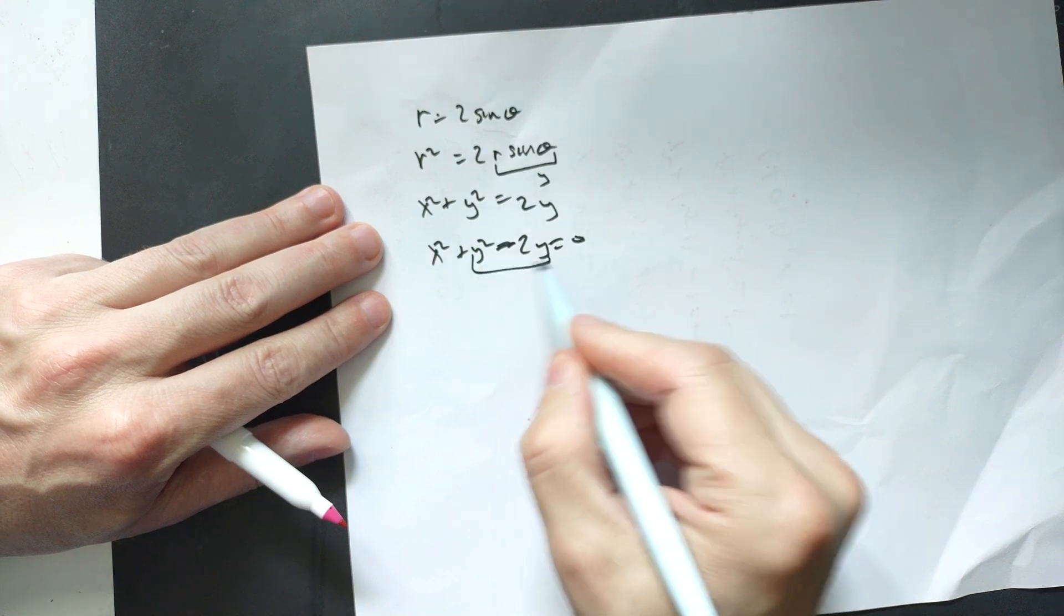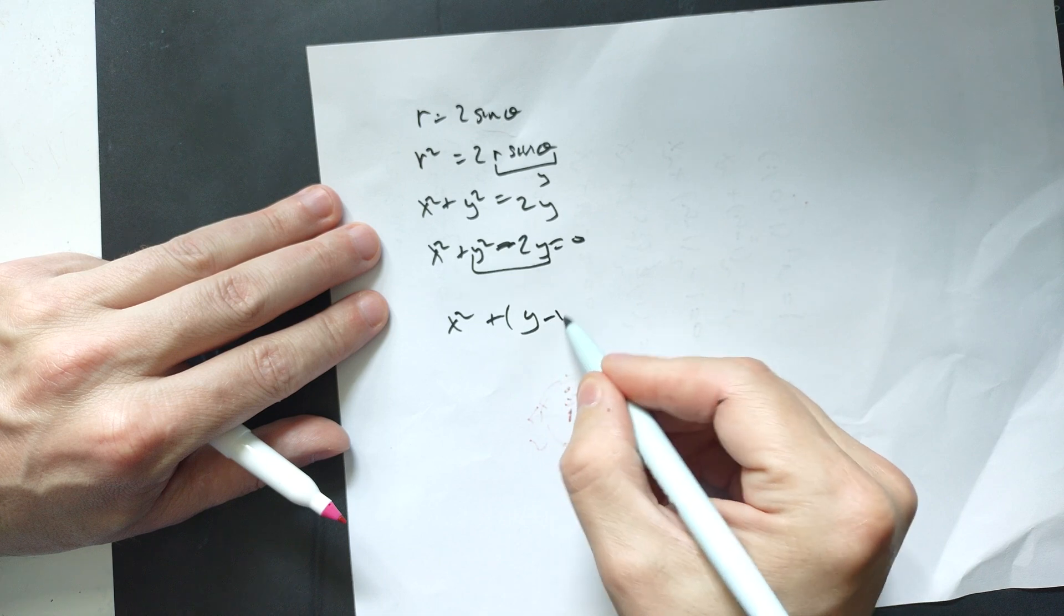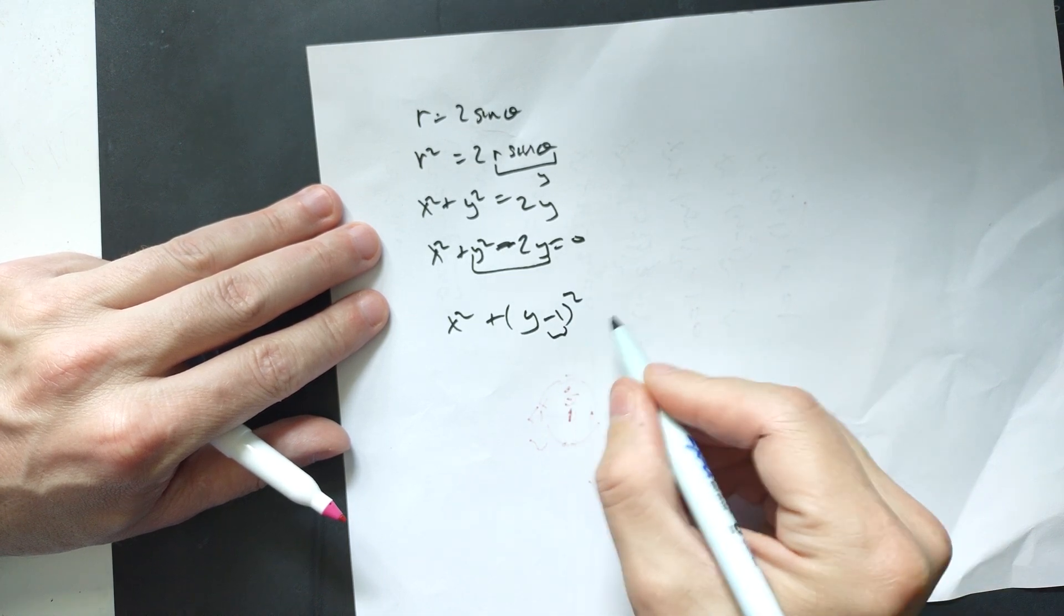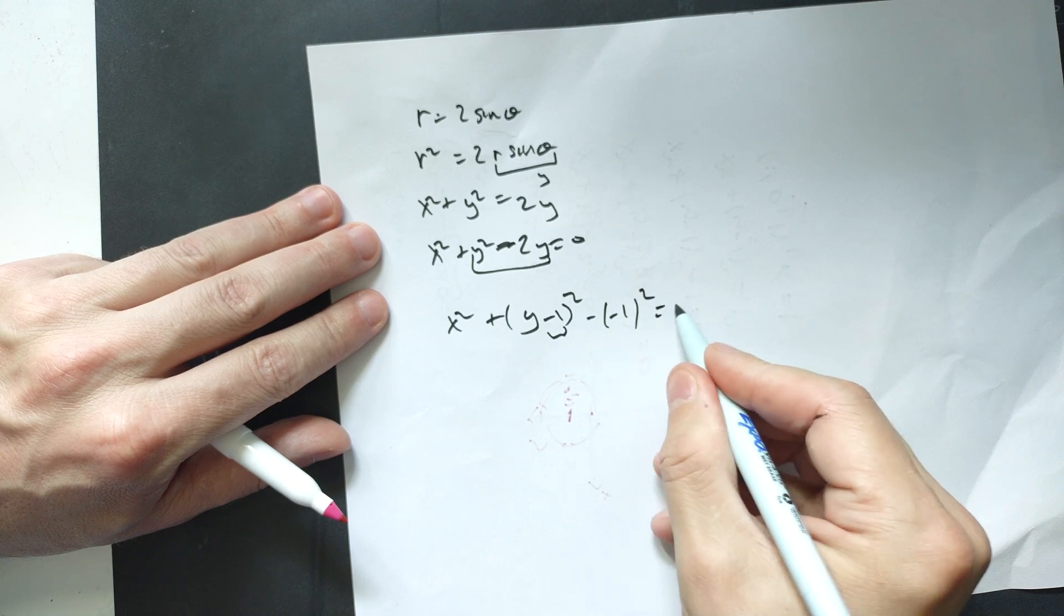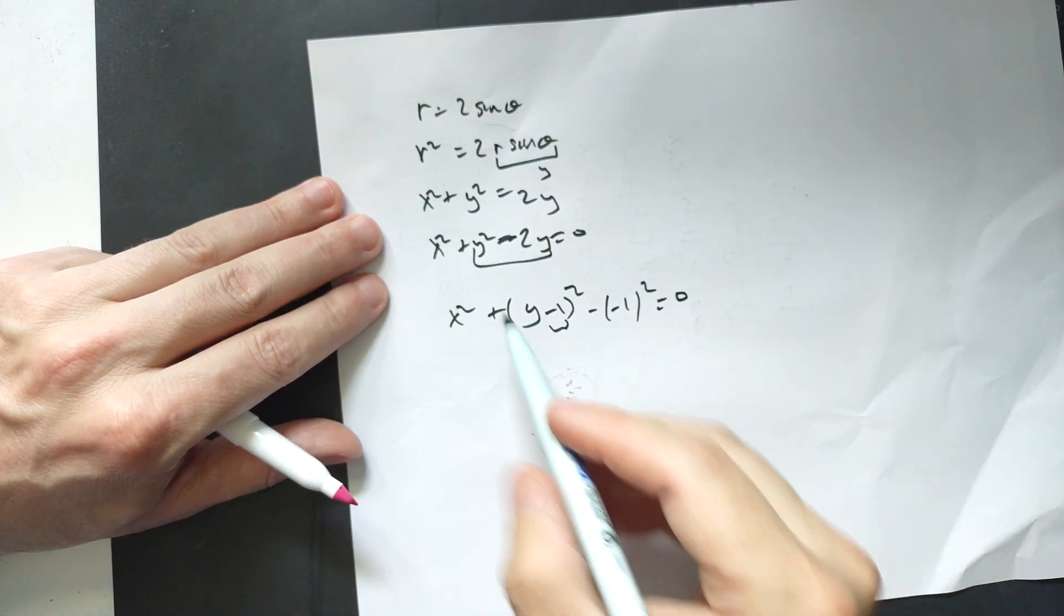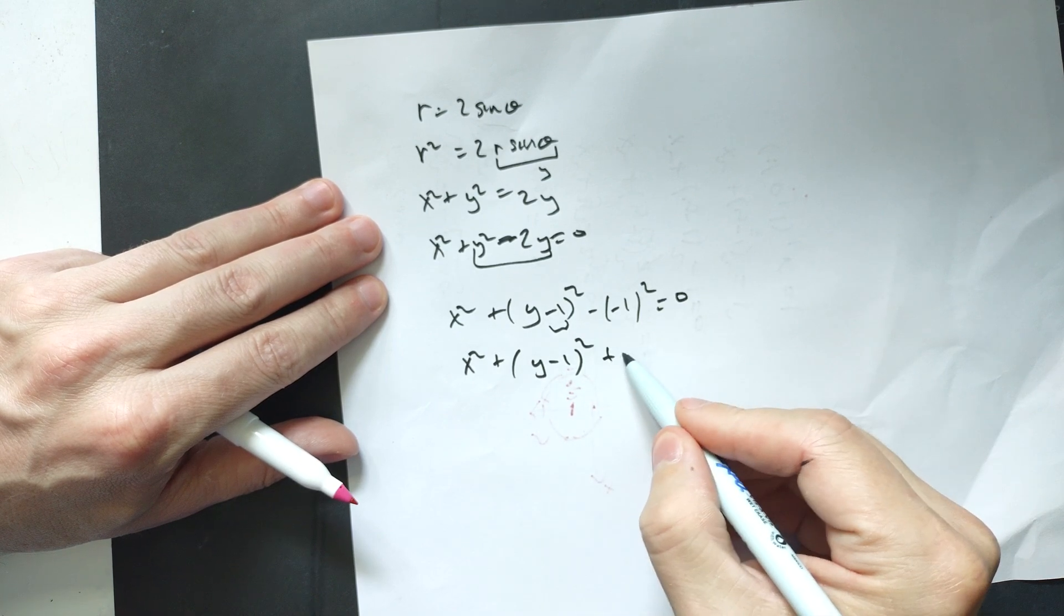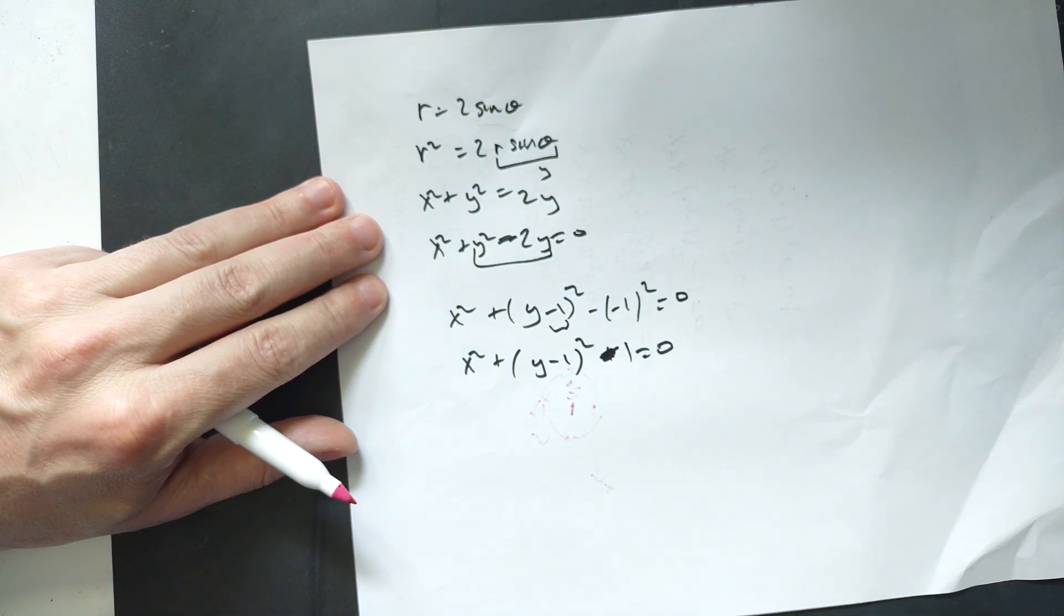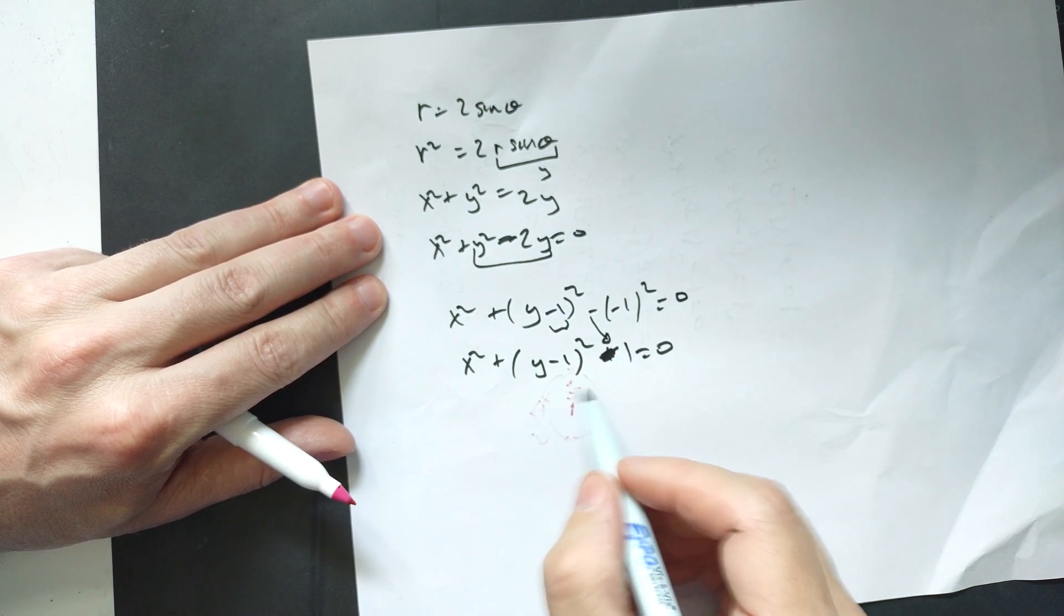So complete the square on these two parts, so it's X squared plus then Y, take one half of negative 2, which is negative 1, squared. Whatever this is, you always subtract it squared, so minus a negative 1 squared equals 0. Complete the square. So X squared plus Y minus 1 squared, it's going to be minus a 1 equals 0, because it's negative 1 squared is 1. This is from here, this negative.